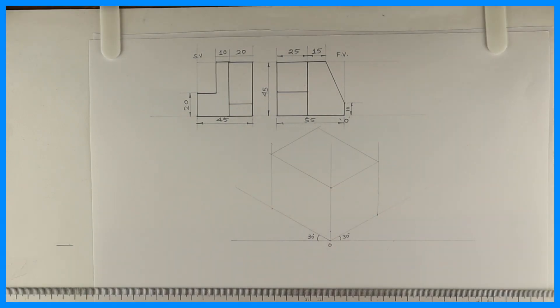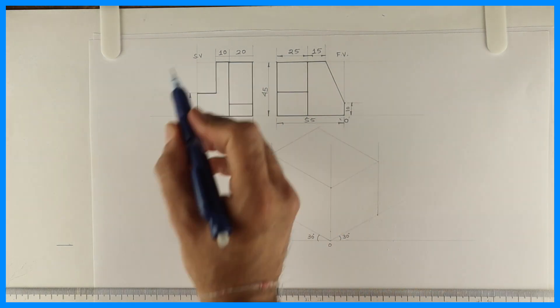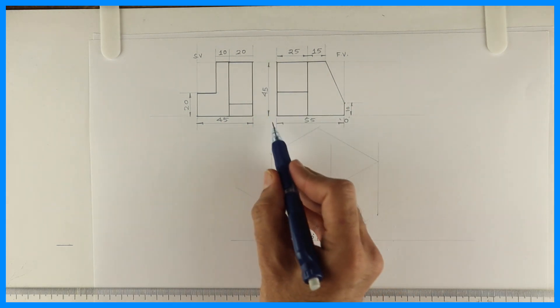Now we'll see this sum where we have to draw isometric. First, front view is given, side view is given. Left side 55, height 45, width 45.